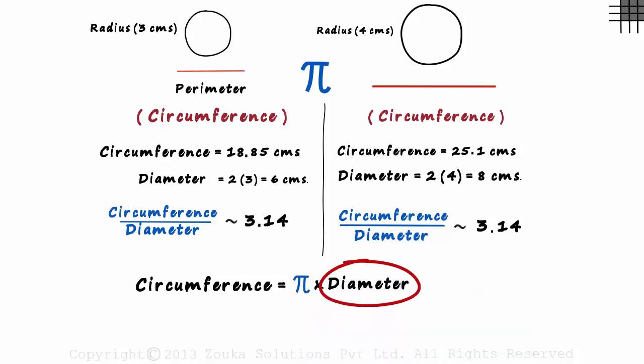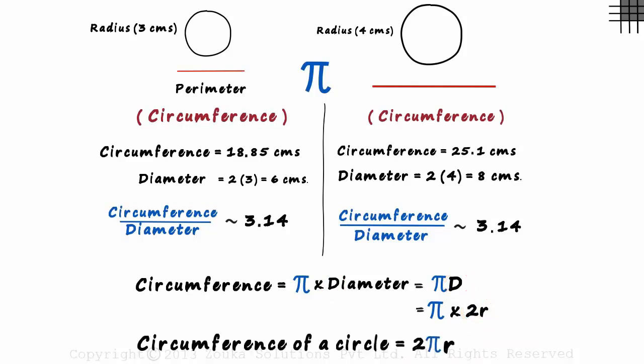If we call the diameter D, then the formula can be written as π × D. Which can also be written as π × 2R. Because the diameter is twice the radius. So the circumference of a circle is written as 2πR. All we did was write this product a bit differently.